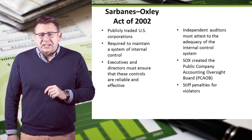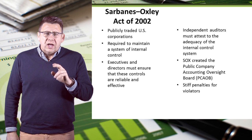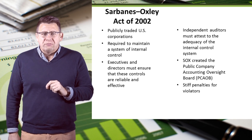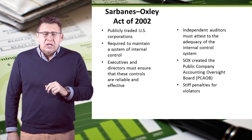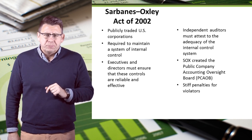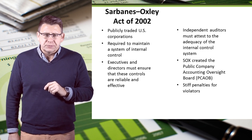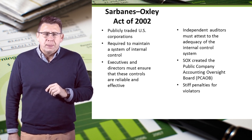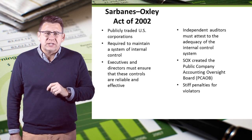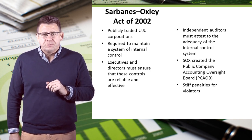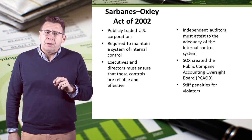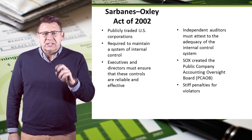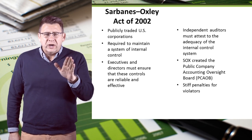The Sarbanes-Oxley Act of 2002, more commonly called SOX, is a bill containing 11 sections. It was enacted in reaction to a number of corporate accounting scandals, including Enron and WorldCom. It applies to publicly traded U.S. companies and requires them to maintain a system of internal controls. Corporate executives and board of directors must ensure that these controls are reliable and effective. Independent outside auditors must attest to the adequacy of the internal control systems. Sarbanes-Oxley also created stiff penalties for violators, including what could be 20 to 25 years in prison.